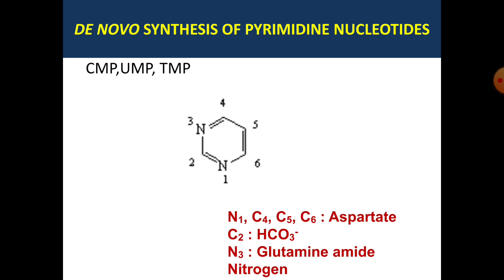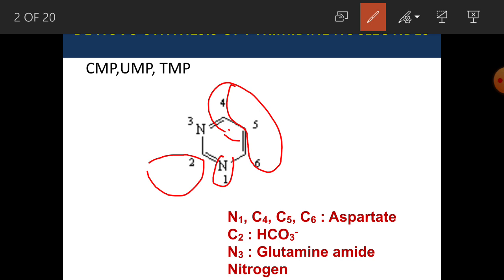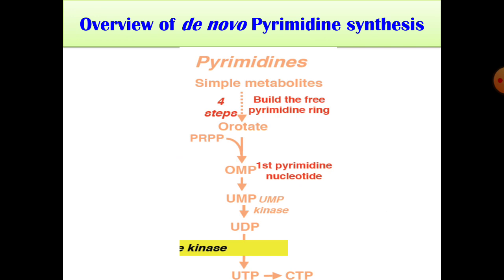Similar to purine synthesis, the different atoms of the pyrimidine ring are obtained from different sources: N1, C4, C5, and C6 are obtained from aspartate; C2 from bicarbonate, that is respiratory carbon dioxide; and N3 from glutamine's amide nitrogen. So again, amino acids and respiratory carbon dioxide are building the pyrimidine ring.